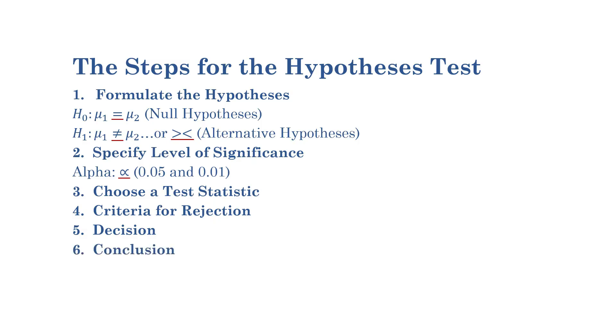Number six: conclusion. Based on the decision made in the previous step, draw the conclusions about the population parameter being tested. There is a lot of information for now, but I guarantee that during the practical examples, the steps will be simple and easy to understand.